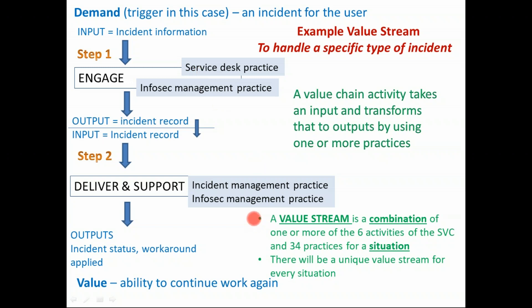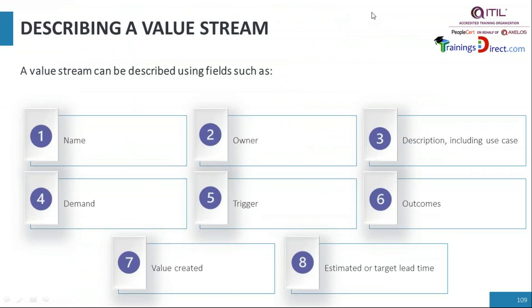Therefore, a value stream is a combination of one or more of the six activities in the service value chain, which may use some of the 34 practices in total. In a given situation you may use three or four practices, or possibly more. Every situation has a unique value stream, and with this understanding we come back to how to describe a value stream.